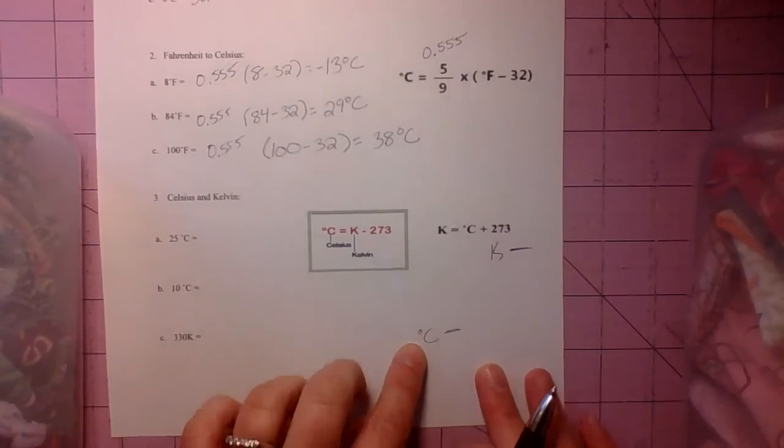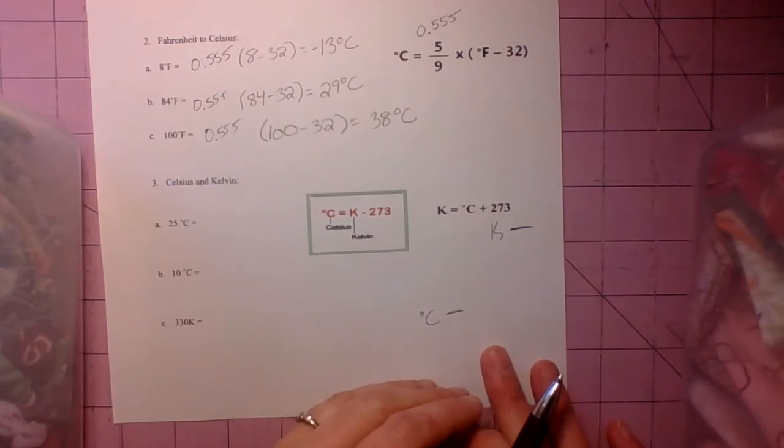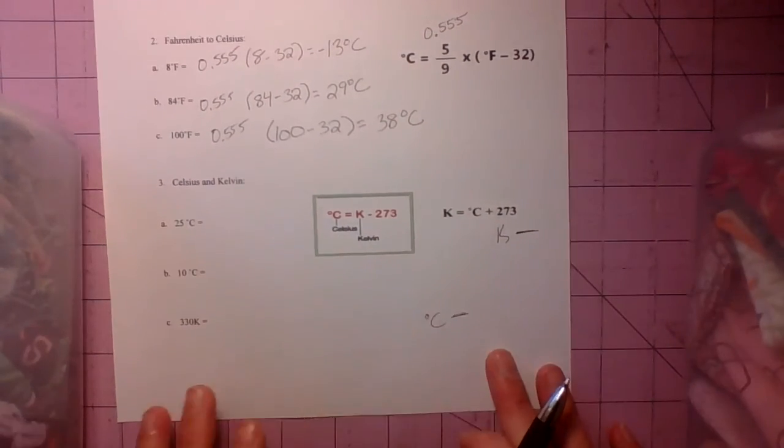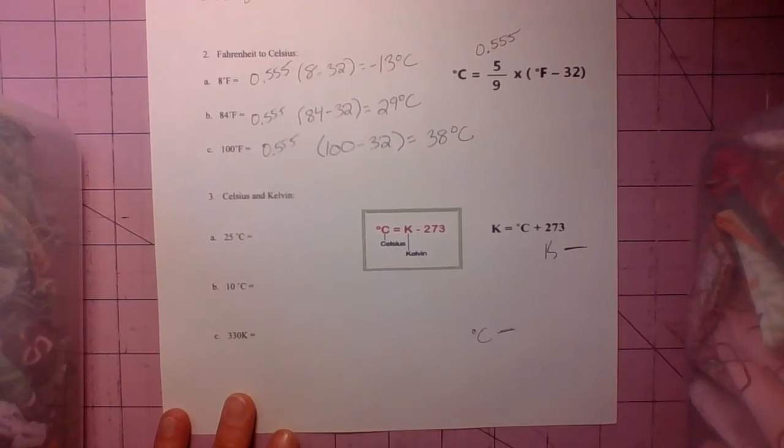If you're going from Kelvin down to Celsius, you're always going to end up with a smaller number. So you're going to subtract. You're going to subtract that number. And that number is 273.